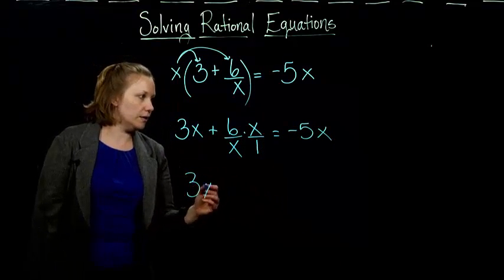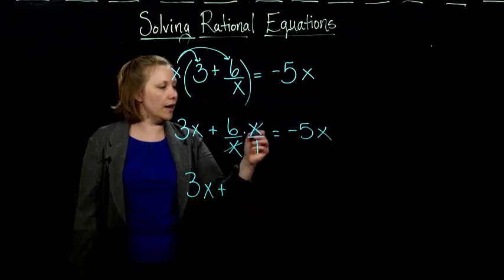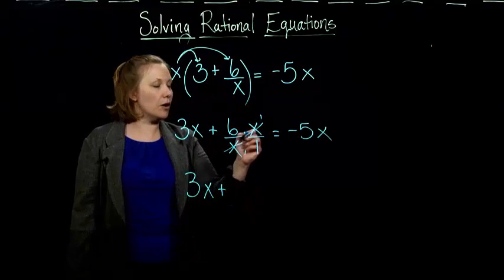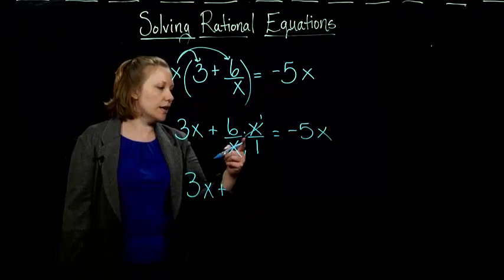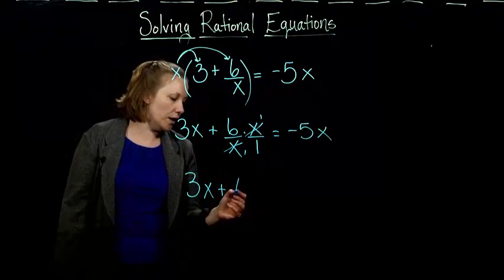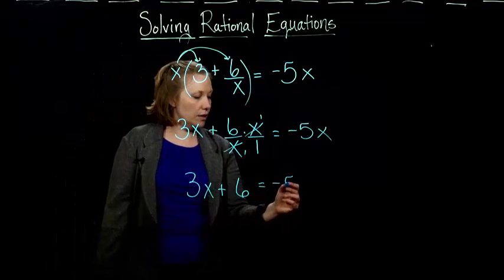So I get 3x plus, what happens when I simplify this fraction here? The x is, right, same number on top and bottom. Any number divided by itself just gives you 1. So I just end up with 6 times 1 over 1, which is the same thing as 6 equals negative 5x.